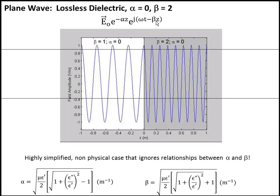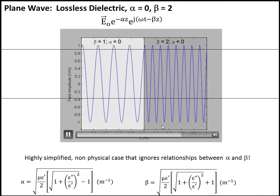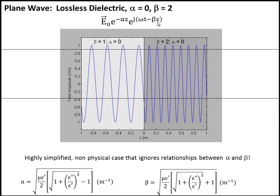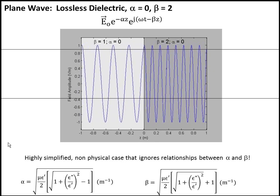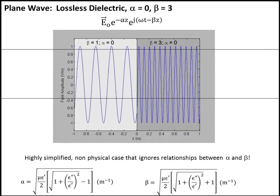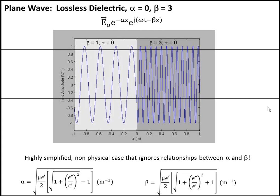With no loss — alpha equal to zero — but increased beta, the wave propagates but slows down inside the material and the wave spatially compresses: wavelengths get closer together. This makes sense because with larger beta, the phase changes more rapidly per unit z, and the wave completes one oscillation over a shorter distance — every time beta z changes by 2 pi we get one oscillation. With beta equal to 3, things are even more compressed and the phase velocity drops by a factor of 3 upon entering the material.